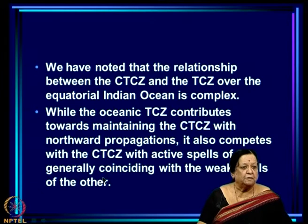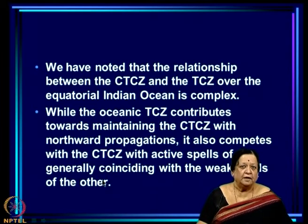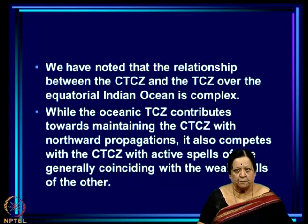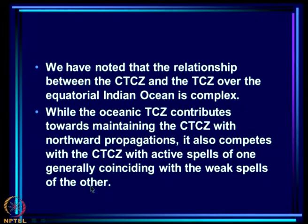It must be borne in mind that the relationship between the oceanic ITCZ and the CTCG is complex. While the oceanic ITCZ contributes towards maintaining the CTCG through northward propagation, it also competes with the CTCG, since two tropical convergence zones over the same longitudinal belt can suppress each other. Generally, weak spells of one coincide with active spells of the other — so there is not only contribution of the oceanic ITCZ to maintaining the CTCG, but also competition.